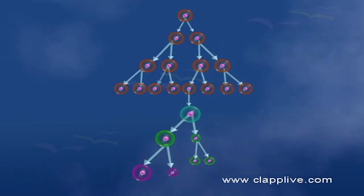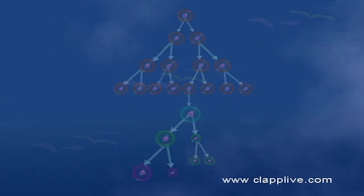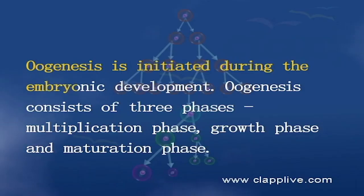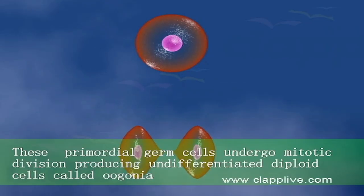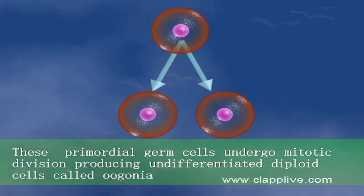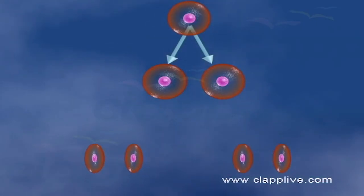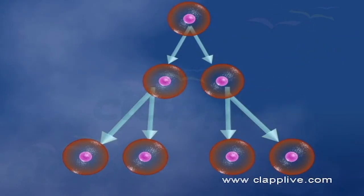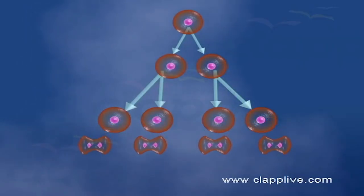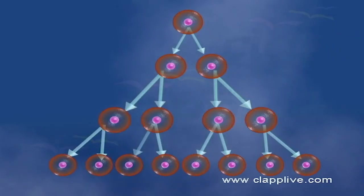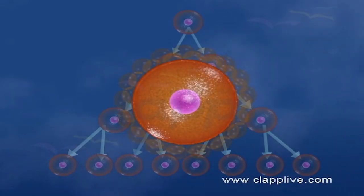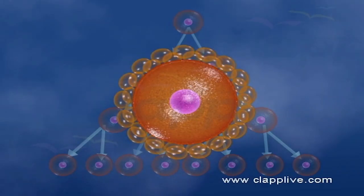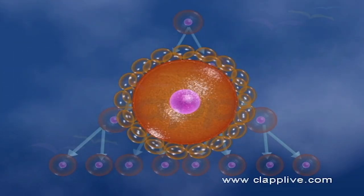Oogenesis. The process of formation of a mature female gamete, the ovum, is called oogenesis. This process is initiated during the embryonic development stage. Oogenesis consists of three phases: multiplication phase, growth phase, and maturation phase. During the multiplication phase, the cells of germinal epithelium of the fetal ovary undergo mitotic division, producing undifferentiated diploid cells called oogonia, or gamete mother cells. Some of these cells grow and become the primary oocyte, which is diploid. Meiosis begins in the primary oocytes soon after their formation, but the division process gets arrested and the oocyte remains in the meiotic prophase 1 stage. Each primary oocyte then gets surrounded by a layer of granulosa cells, which are derived from the germinal epithelium lining the ovary. The structure thus formed is called the primary follicle.